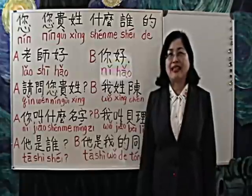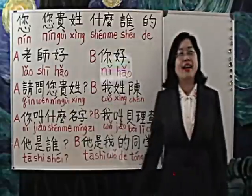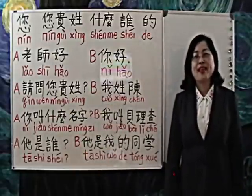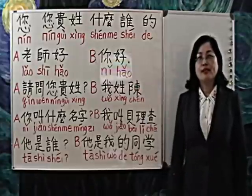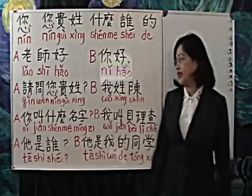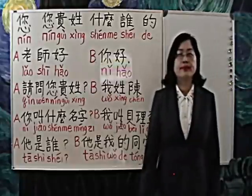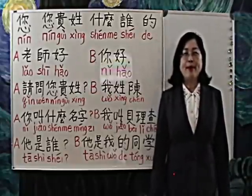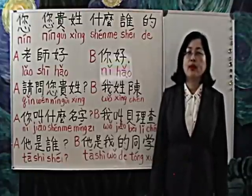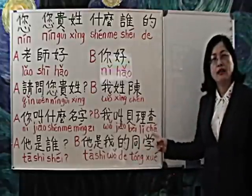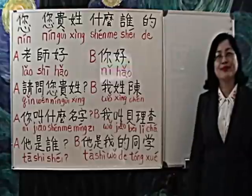The verb 叫 has several meanings. It means to be called. In this lesson, it must be followed by an object. For example, 你叫什么名字? — What is your name? 我叫贝理查 — My name is Richard Blake.